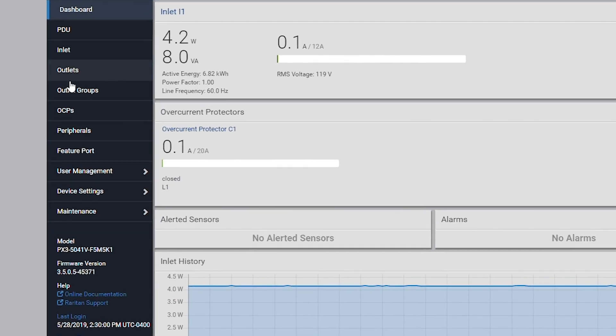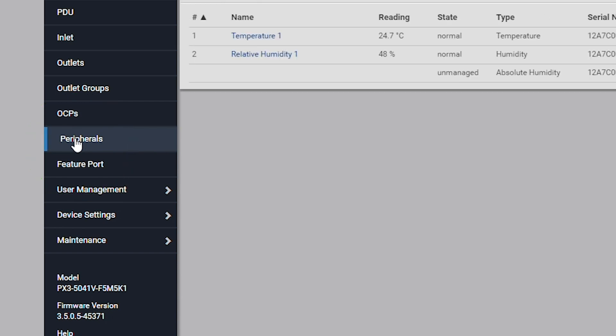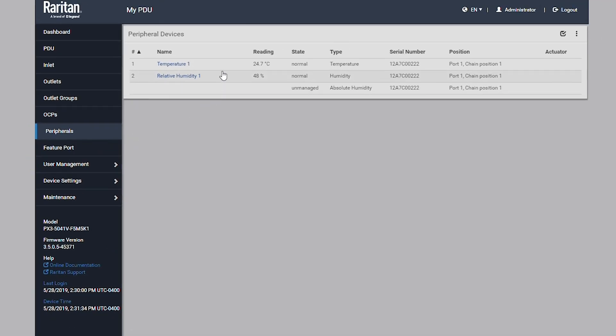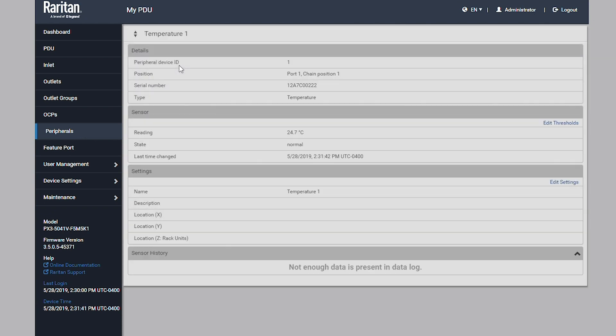Next, let's take a look at setting up sensors in the GUI. From the main dashboard, sensors can be found under the peripherals menu. Every smart sensor is plug and play. So, as soon as it's connected, it will show up under the peripherals list in the order it's connected in the sensor chain.